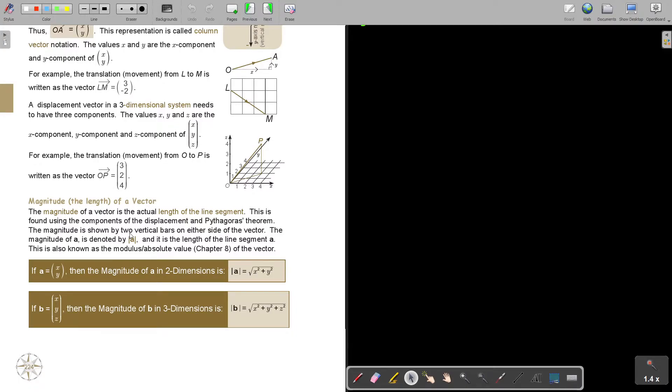The magnitude is shown by two vertical bars on either side of the vector. The magnitude of a is denoted by this, so vertical bars. And it's the length of the line segment a. This is also known as the modulus or absolute value of the vector that we did in chapter 8. If A is (x, y), then the magnitude of a two-dimensional is √(x² + y²). But if B is (x, y, z), then the magnitude of B in three-dimensional is √(x² + y² + z²).